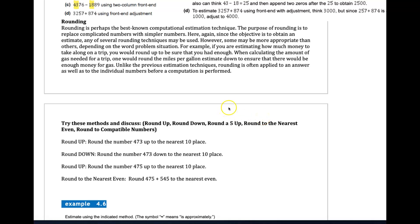We continue on Chapter 4.1 with rounding. Rounding is just a form of estimation—it's probably the best-known estimation technique. The purpose of rounding is to replace complicated numbers with simpler numbers. The objective is to obtain an estimate, and we have a very specific way of rounding so we can come up with some estimated value for some computation.